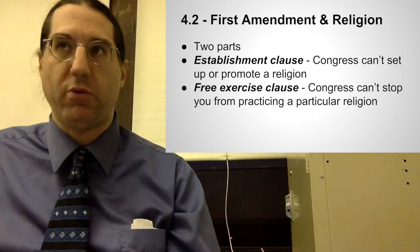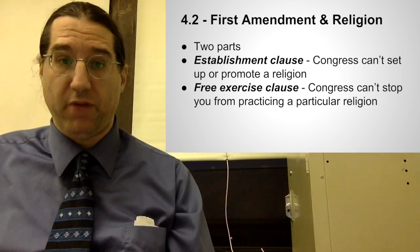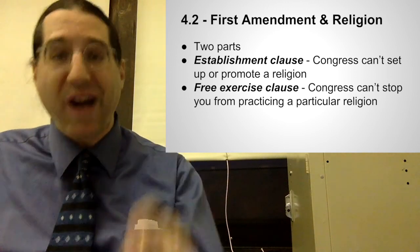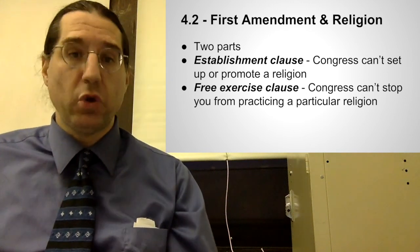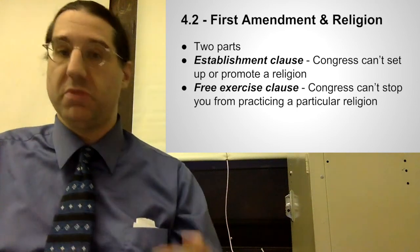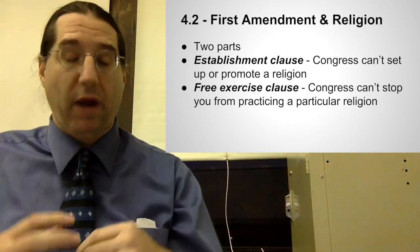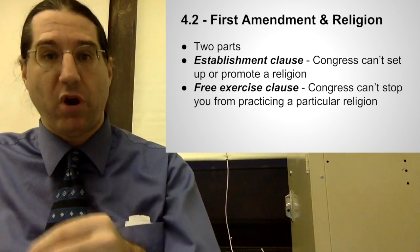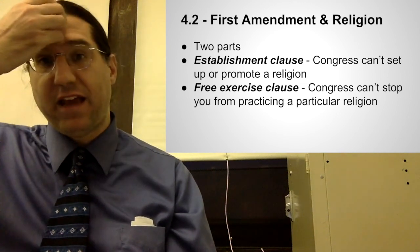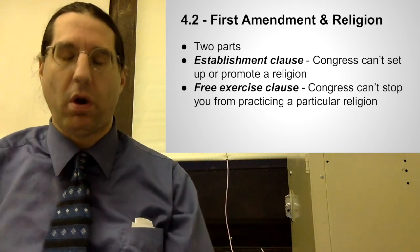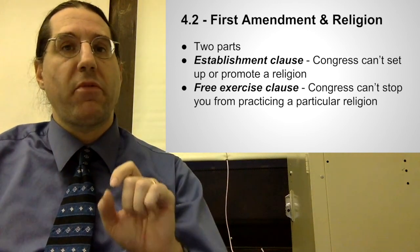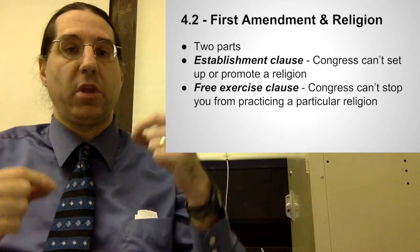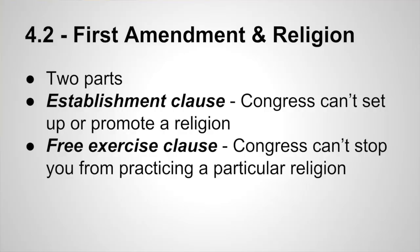Congress will not establish an American religion. The other part of freedom of religion is that the government can't stop you from following a particular religion. If you follow Islam, Judaism, Hinduism, Buddhism, Zoroastrianism, or any other religion, the government can't stop you. They can't pass a law preventing you from taking a Sabbath day off. So religious freedom has two parts: the government can't create a religion, and the government can't stop you from exercising religion. The Establishment Clause prevents the government from setting up a religion; the Free Exercise Clause prevents the government from stopping you from following one.